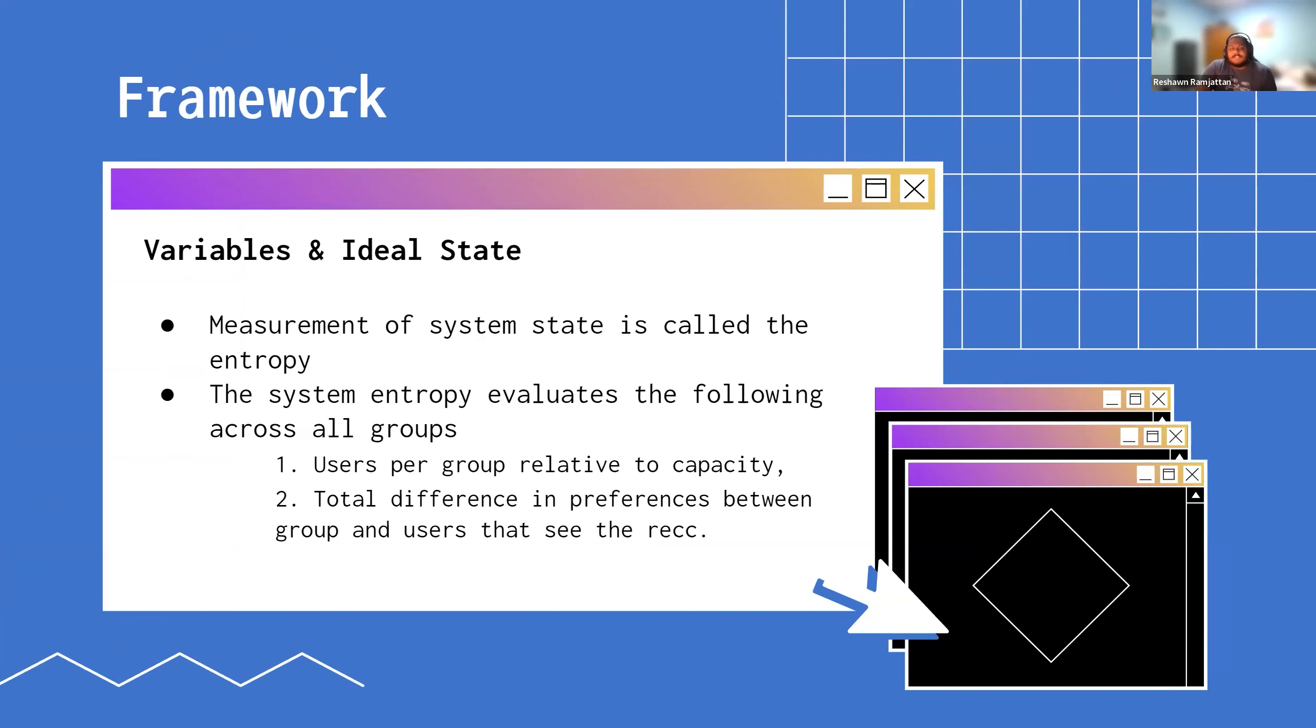For the framework itself, the first thing we need to do is define our variables. What is this, how do we define this system and what are we optimizing to make this system in line with our goals? We call that overall system state a single value, the entropy. The entropy is made up of two important variables: the users per group relative to the capacity of the group, and the total difference in the preferences between a group and the users that see that recommendation.